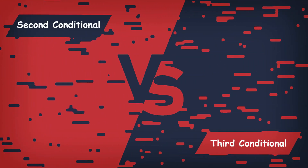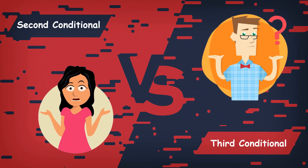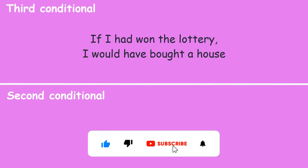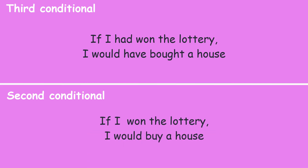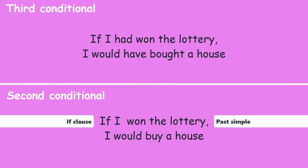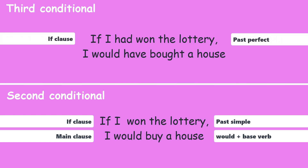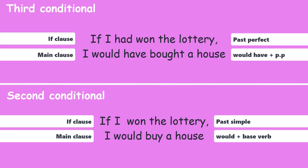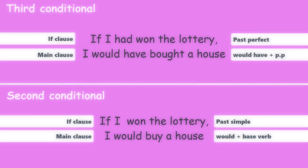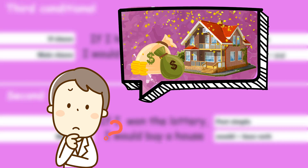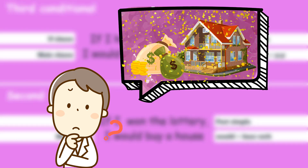Now let's compare the second conditional with the third conditional. We had a separate lesson about the second conditional, but I want to make sure you have understood the points. If I had won the lottery, I would have bought a house — third conditional. If I won the lottery, I would buy a house — second conditional. If clause past simple, main clause would plus infinitive. If clause past perfect, main clause would have plus past participle. These sentences are both about imagination, but there is quite a big difference between them.